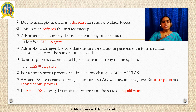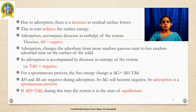From experiments, the heat of adsorption per mole of adsorbate goes on decreasing as adsorption proceeds. Delta H becomes less and less negative as adsorption proceeds further. Ultimately, delta H becomes equal to T·delta S, making delta G equal to zero. At this stage, equilibrium is reached.